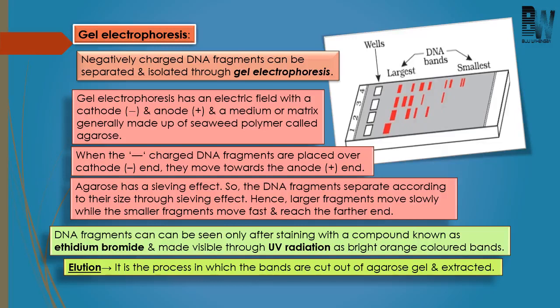In this technique, the medium is set up with cathode and anode at either end, and the negatively charged DNA is loaded towards the negative pole. The DNA, being negatively charged, will move towards the positive side of the medium. Agarose has a sieving effect, so the DNA fragments move through the pores of the agarose gel. As the fragments move, smaller DNA fragments move faster than larger ones, so the DNA fragments are separated by size.